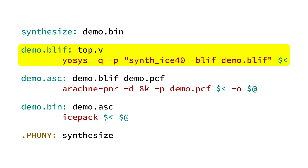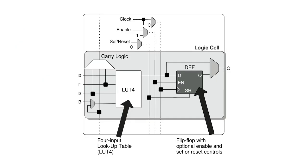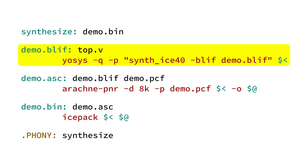Yosys is a powerful framework of conversions, optimizations, and transformations for digital designs. In this case it's being used to load up our Verilog code, simplify and optimize it, and then map it into the primitives available in the iCE40. Inside the iCE40, the fundamental unit is the logic cell — each logic cell contains a four-input binary lookup table with a single output and a one-bit flip-flop. Yosys transforms our Verilog into a design built out of these units, and then emits the output into a BLIF file.